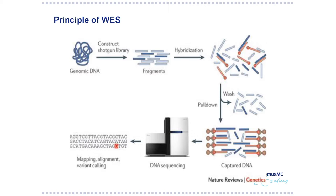The principle of whole exome sequencing: you start with genomic DNA, make it into fragments, and then hybridize it with probes to select for all the coding regions. These are pulled down, capturing the DNA of the exome, which is then sequenced. This is in contrast to Sanger sequencing, in which you use primers to amplify all the different parts of the exons directly by PCR.